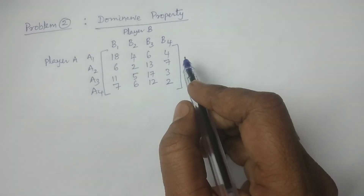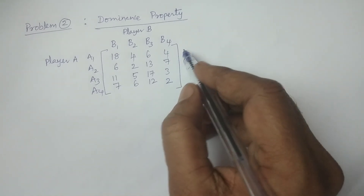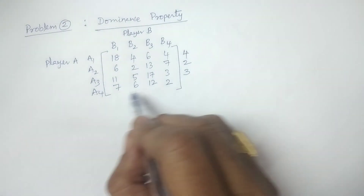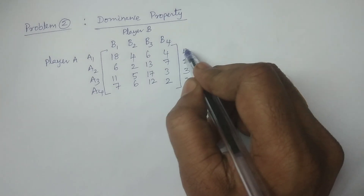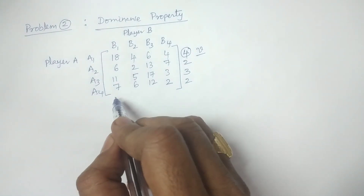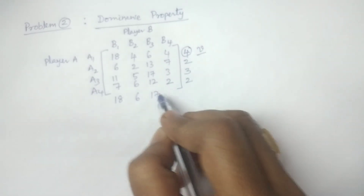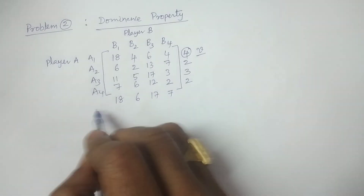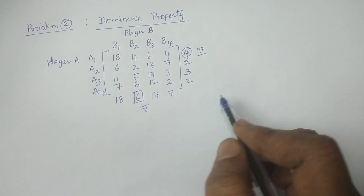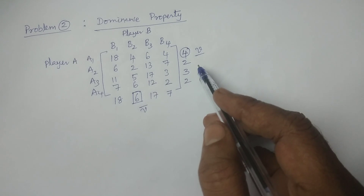First of all, we quickly calculate whether the saddle point exists or not. The row minima are 4, 2, 3, and 2, giving a maximum of 4 — the maximin value. The column maxima are 18, 6, 17, and 7, among which the minimum is 6 — the minimax value. Since the maximin and minimax values are not equal, the saddle point does not exist.